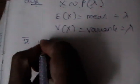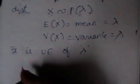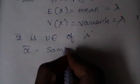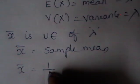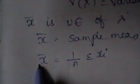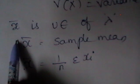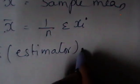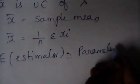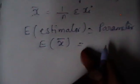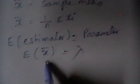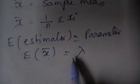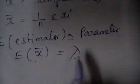You need to show that X̄ is an unbiased estimator of lambda. X̄ stands for the sample mean, defined as X̄ = (1/n) Σ Xᵢ. An estimator is unbiased if E(estimator) = parameter. So here, you have to show that E(X̄) = λ. If you can show that, then X̄ is the unbiased estimator of lambda.